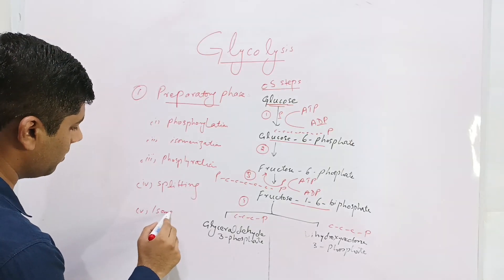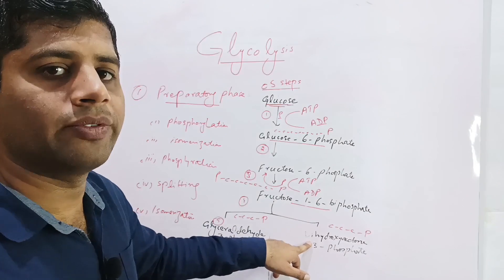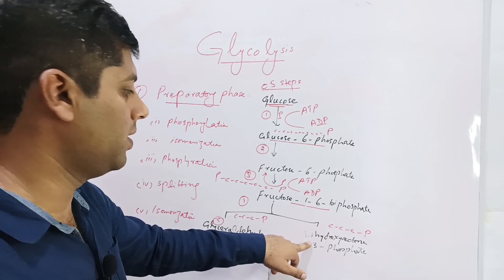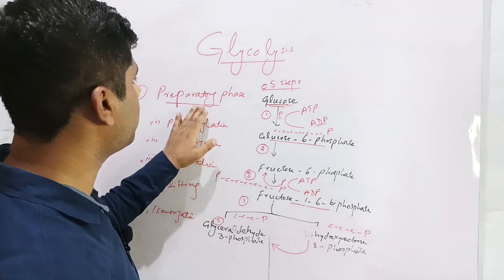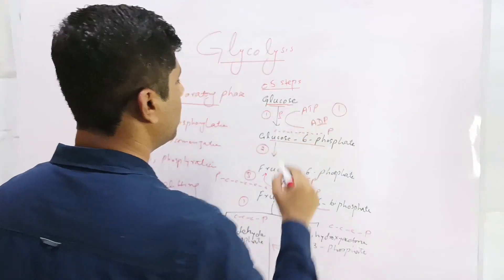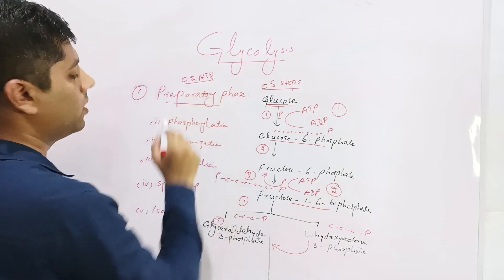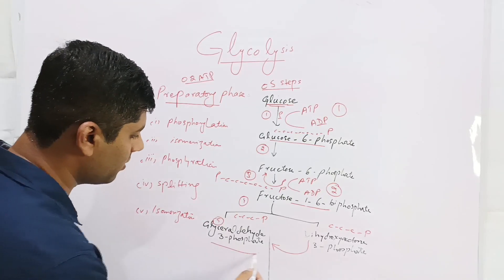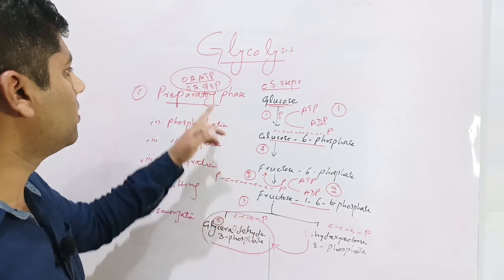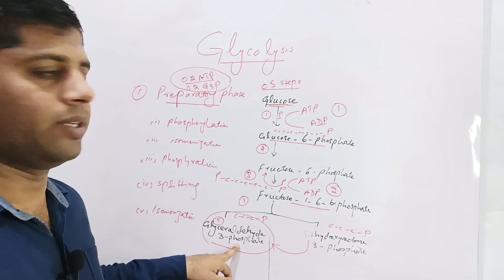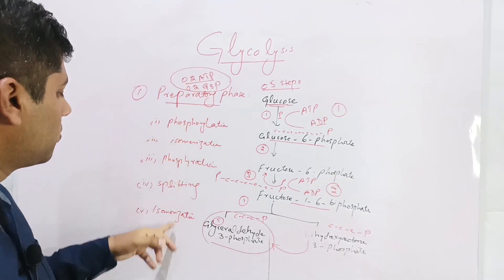The fifth step is again isomerization. Dihydroxyacetone phosphate is isomerized into glyceraldehyde-3-phosphate. At the end of the preparatory phase, two ATP molecules have been utilized — the first with glucose and the second with fructose. We have obtained two molecules of glyceraldehyde-3-phosphate (G3P), which concludes the preparatory phase.